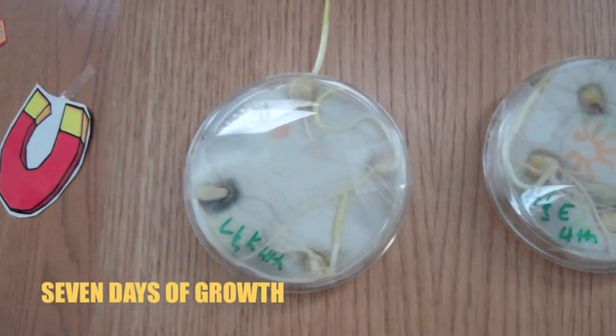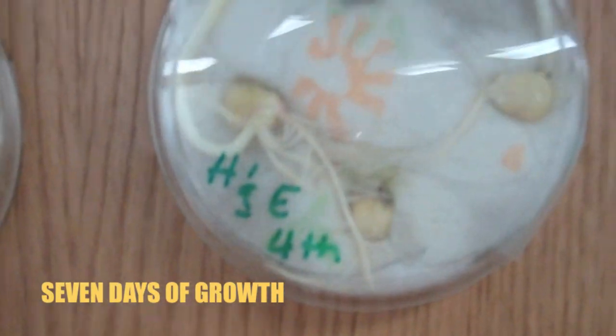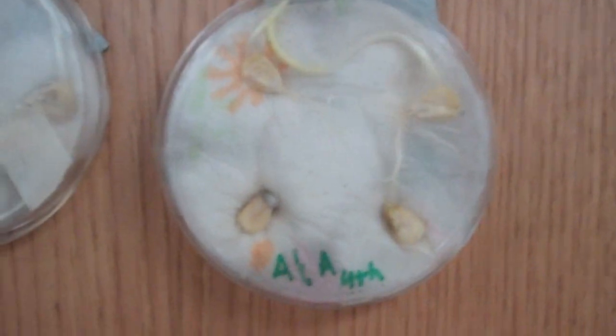Four days later, there's much more growth going on with our corn plants. We see that regardless of the position of the seeds, the stems are growing up and the roots are growing down. This proves that corn seeds do recognize the effects of gravity on their growth.